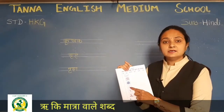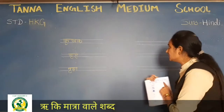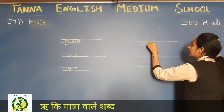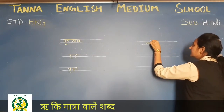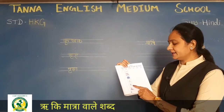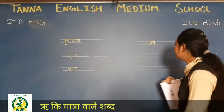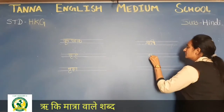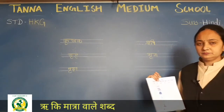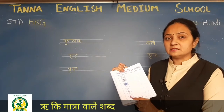Ye kis ka picture hai? Rishi. So rishi yahan pe likha hai — this one. Matlab, ya haan pe likha rahega, yaahan se dekho, aapko likhna hai. Ri, chhoti i ki matra karke, sh — Rishi.